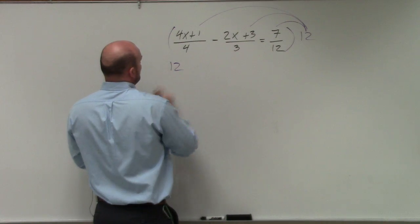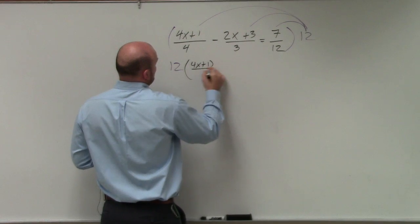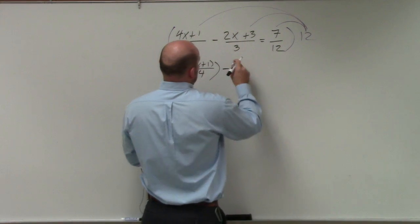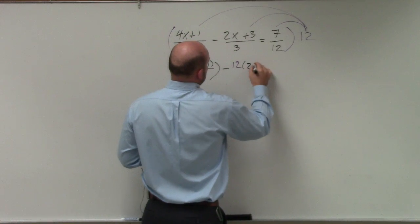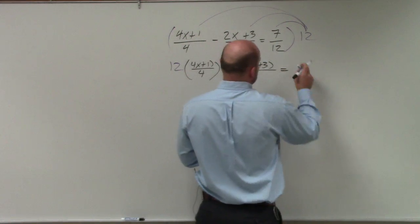So it basically looks like 12 times (4x plus 1 over 4) minus 12 times (2x plus 3 over 3), and I'm going to break this out very nice and slowly, because it's the beginning of the year.